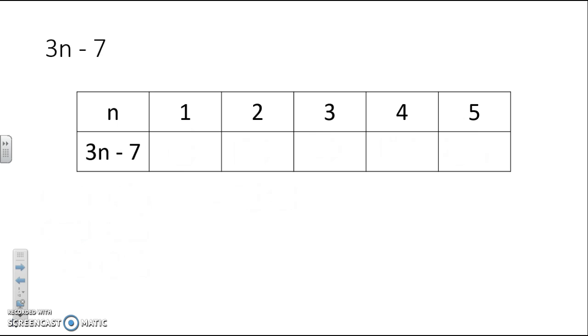Last one, we've got 3n take away 7. So we need to work out 3 times n and then take away 7. So for the first one, it's going to be 3 times 1, which is 3, take away 7. And 3 take away 7 is minus 4. So the answers can be negative as well.